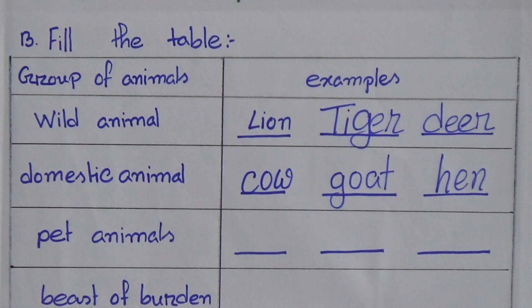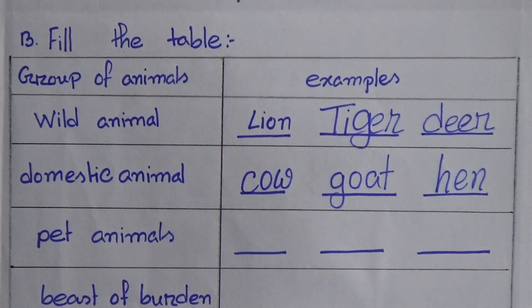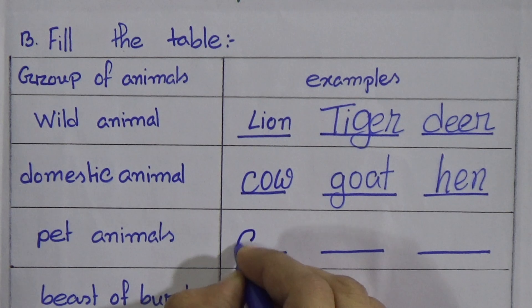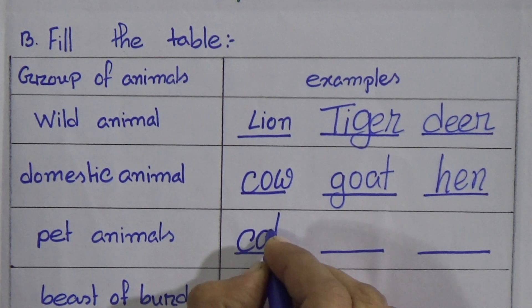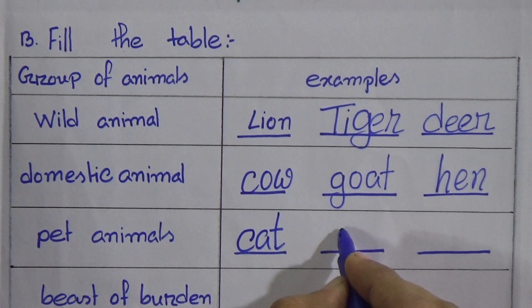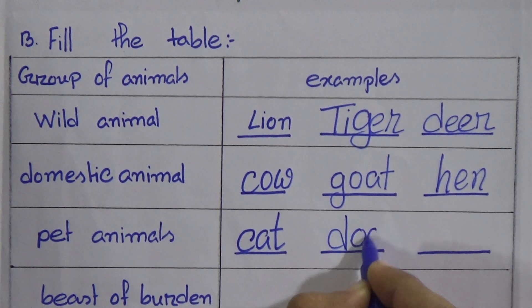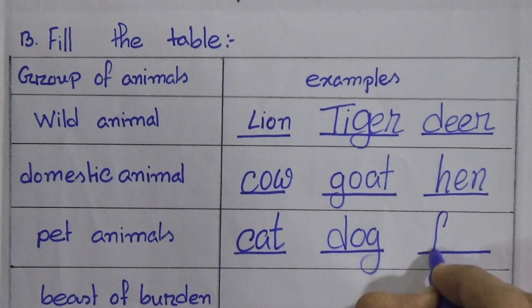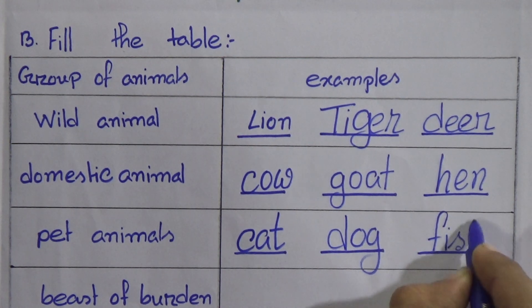Pet animals are the animals which we love and give affection to, and we keep them in our house. They are basically cat, dog, parrot, fish, or different kinds of birds. Pet animals: cat, dog, fish.